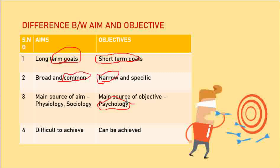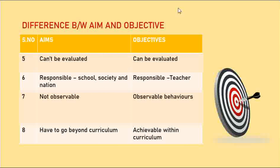Aim's main source is philosophy and sociology. Aims are difficult to achieve — not everyone can achieve them. For example, not everyone can become a doctor. But objectives can be achieved. Also, aims cannot be evaluated — you cannot calculate the quality, amount, or value of an aim. But objectives can be evaluated.